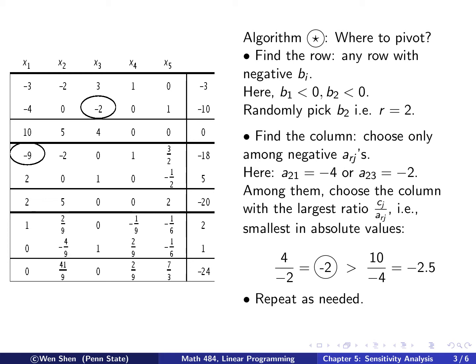Before moving on, note that we started with non-negative coefficients of the objective function and they remain non-negative throughout. This is exactly because of the way we choose the pivoting point — the way we choose the row and in particular the way we choose the column with the largest ratio in value.